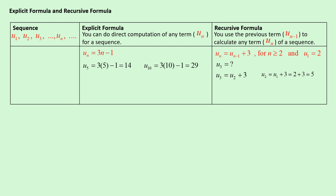You need to find out the value of term 2 first, and then with that previous term you can find the third term. To find term number 10, you need term number 9; to find term number 9, you need term number 8, and so on. With a recursive formula you cannot do direct computation — you always need the value of the previous term.